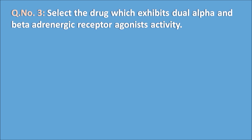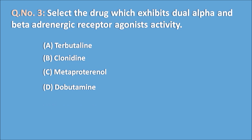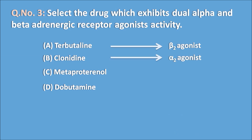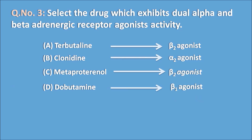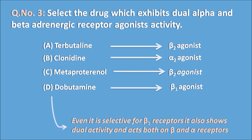Third question: select the drug which inhibits dual alpha and beta adrenergic receptor agonist activity. Options are A. terbutaline, B. clonidine, C. metaproterenol, and D. dobutamine. Terbutaline is a beta-2 agonist; clonidine is an alpha-2 agonist; metaproterenol is a beta-2 agonist; and dobutamine is a beta-1 agonist. However, dobutamine also shows dual activity, acting on both beta and alpha receptors. So dobutamine is the answer.